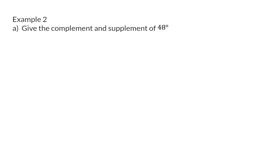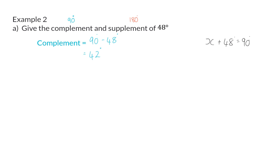Example 2: Give the complement, adding up to 90 degrees, and the supplement, adding up to 180 degrees, of 48°. The complement of a number is the value added to it which gives us 90 degrees. So we need to determine the difference between 90 and 48, which gives us 42 degrees — meaning 42 plus 48 equals 90 degrees. To determine the supplement, we take 180 degrees and subtract 48, so the supplement is 132 degrees.